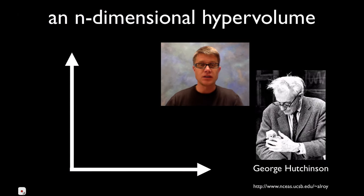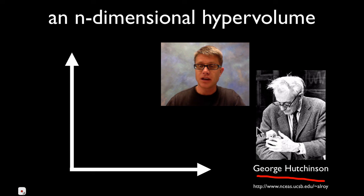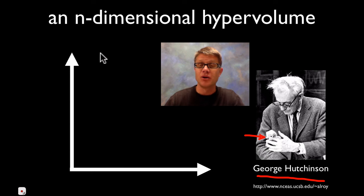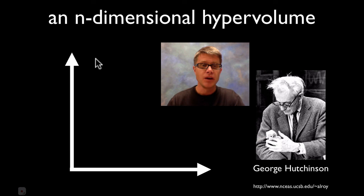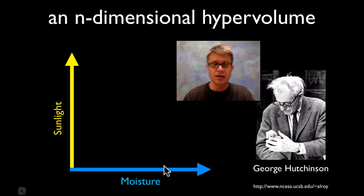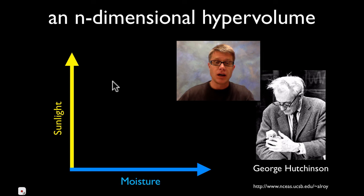One of the first scientists to come up with a good definition for a niche is George Hutchinson. He defined it as an n-dimensional hypervolume. That seems like a crazy term, so what's he really talking about? He's saying let's put a biotic or abiotic factor on each axis — for example, sunlight on one side and moisture on the other. This gives us a two-dimensional area.